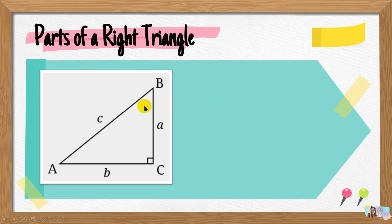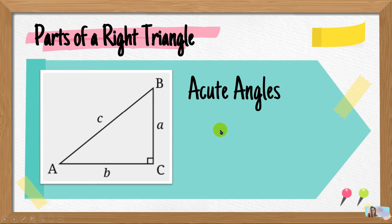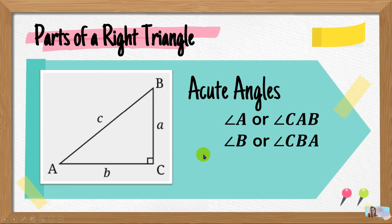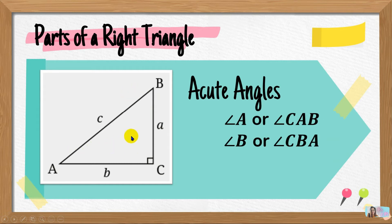The remaining two angles are called acute angles. They are called acute angles because they are less than 90 degrees. Acute angles are angles having a measurement less than 90 degrees. So angle A, or CAB or BAC, is an acute angle. Also, angle B, or CBA or ABC, is also an acute angle. So those are the parts of a right triangle: hypotenuse, legs, right angle, and acute angles.